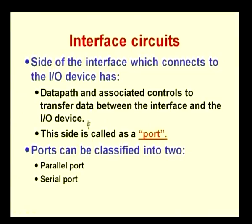Depending on the type of device, you could have different types of interfaces. The side of the interface that connects to the I/O device is normally called the port. We can have basically two types of ports: the parallel port and the serial port. These are terms commonly heard when buying a PC — how many serial ports or parallel ports it has. These ports are the part of the interface that allow you to connect to different input-output devices.